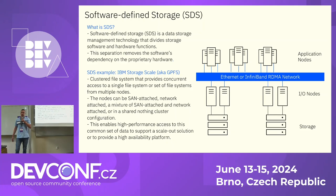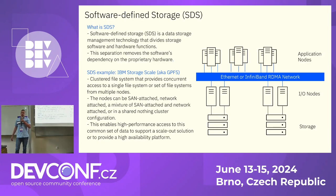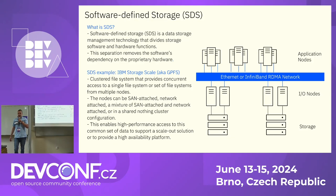One example of software defined storage is IBM Storage Scale, also known as GPFS or General Parallel File System. It is a clustered file system that can be deployed in shared disk or shared nothing mode, designed for high performance applications and used in many of the largest supercomputers in the world. A typical cluster can have up to 10,000 nodes.